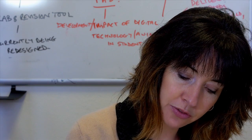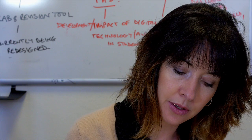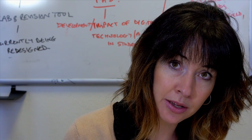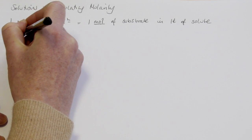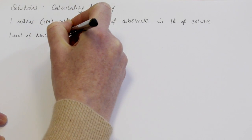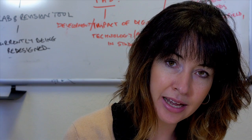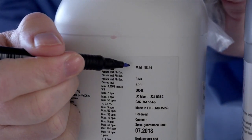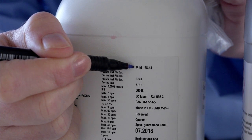We need to be able to define what one mole of the substrate is and how to find that out. One mole of the substrate is actually equivalent to its molecular weight expressed in grams. So one mole of sodium chloride equals its molecular weight, and we can find that out from looking at the label on the side of the bottle of reagent. The molecular weight of sodium chloride is 58.4 grams.